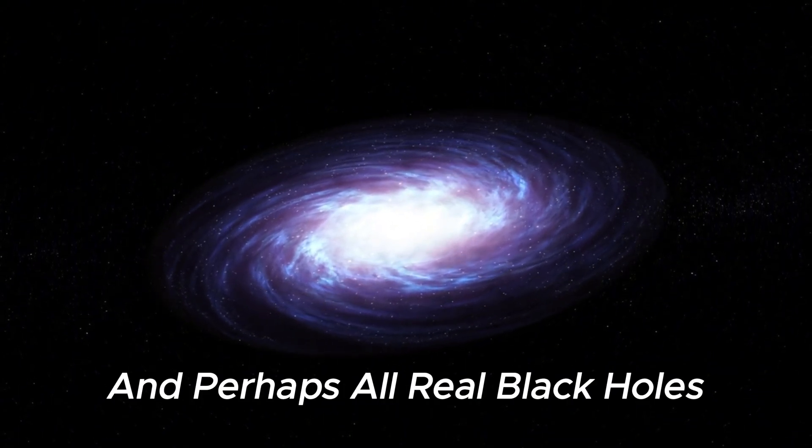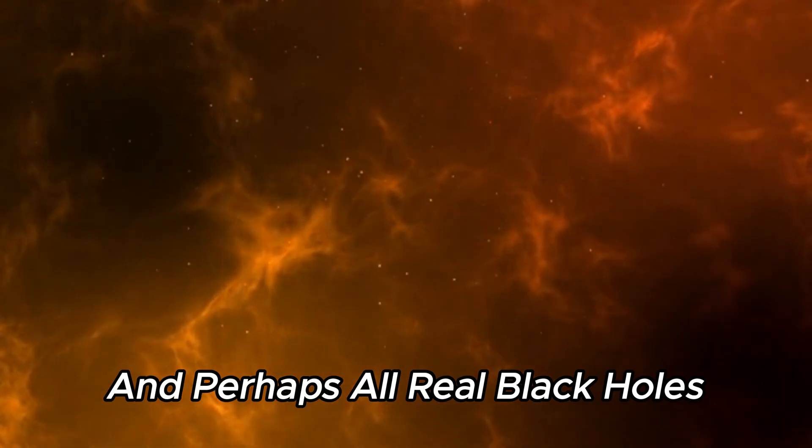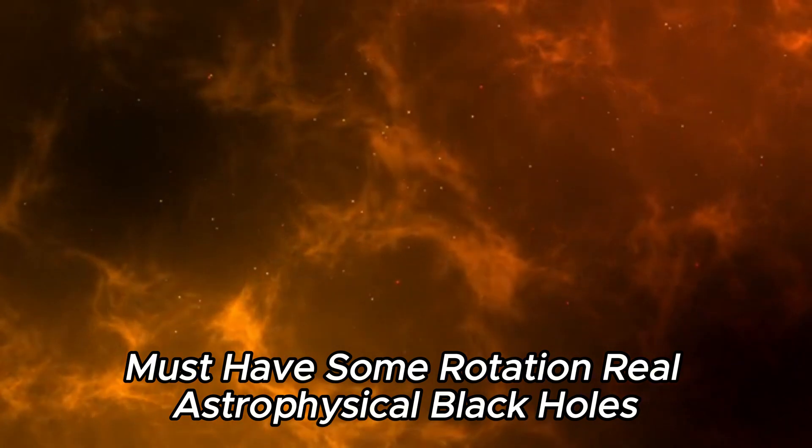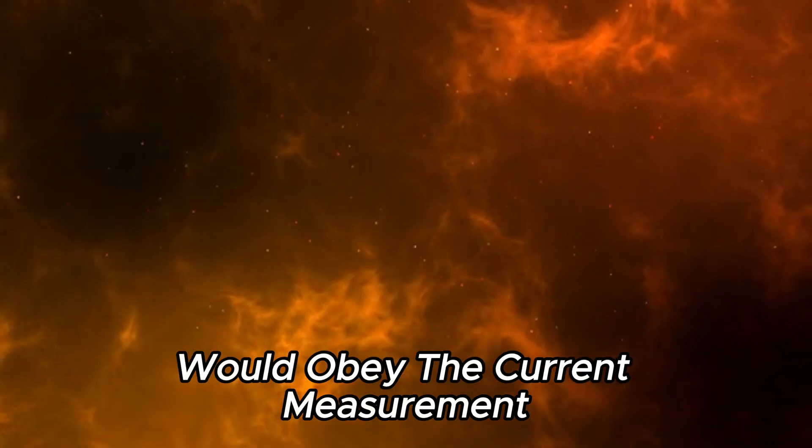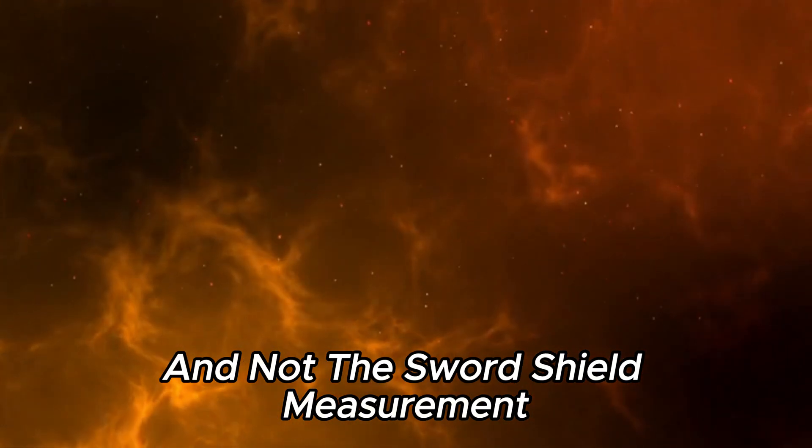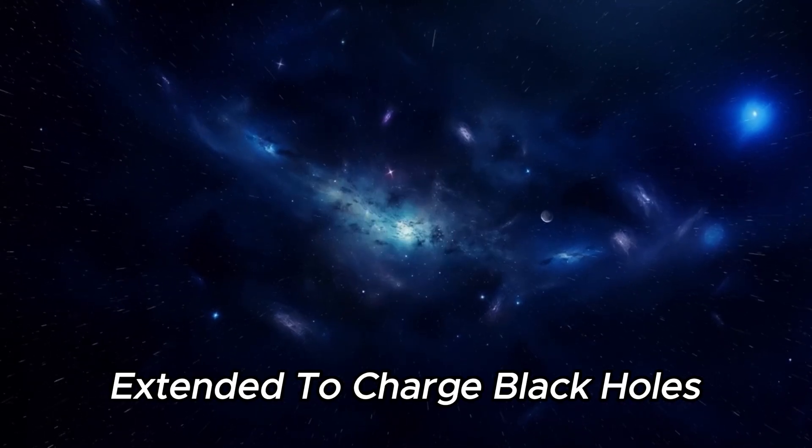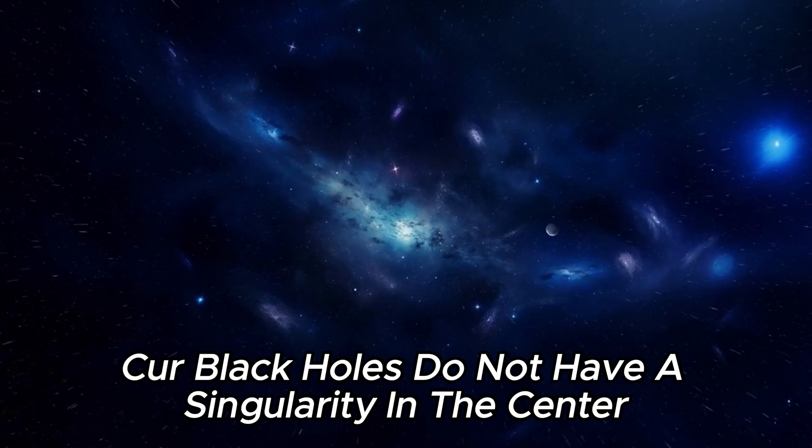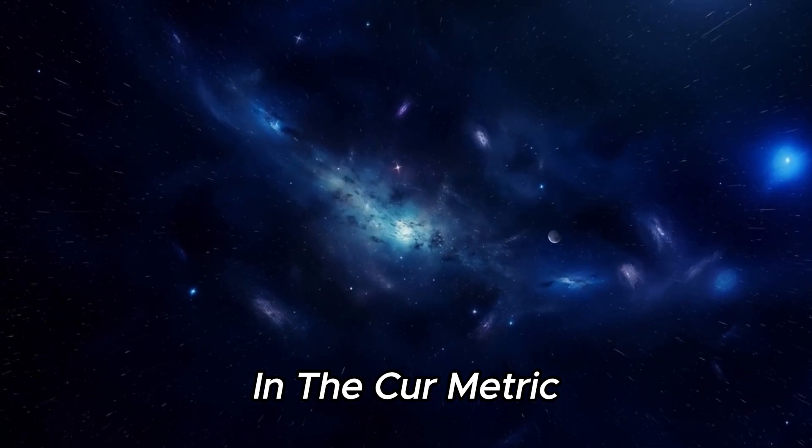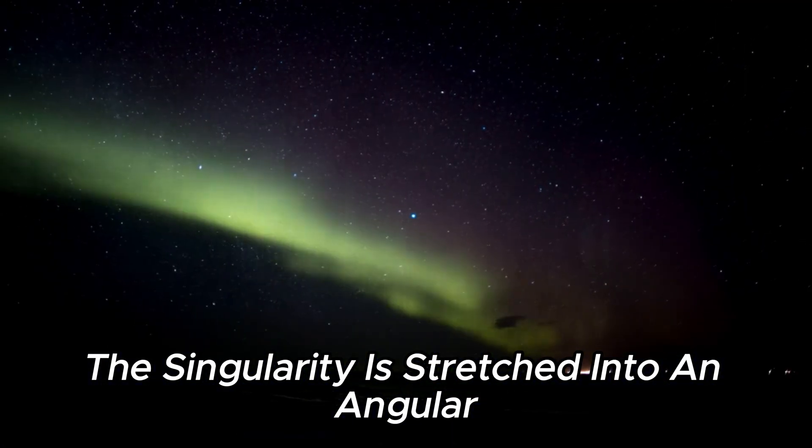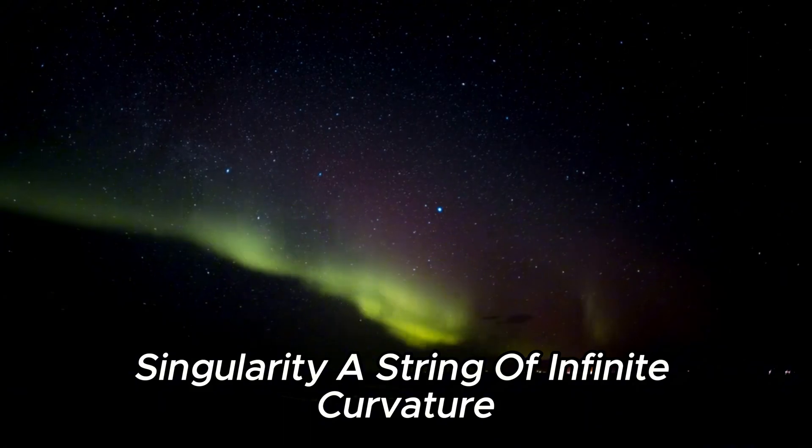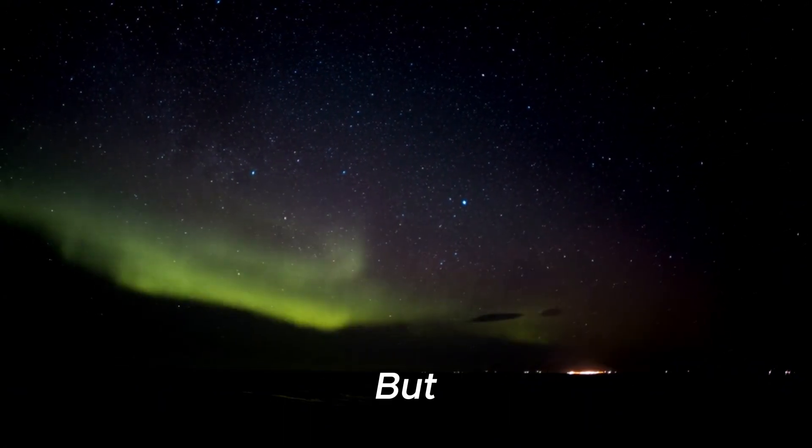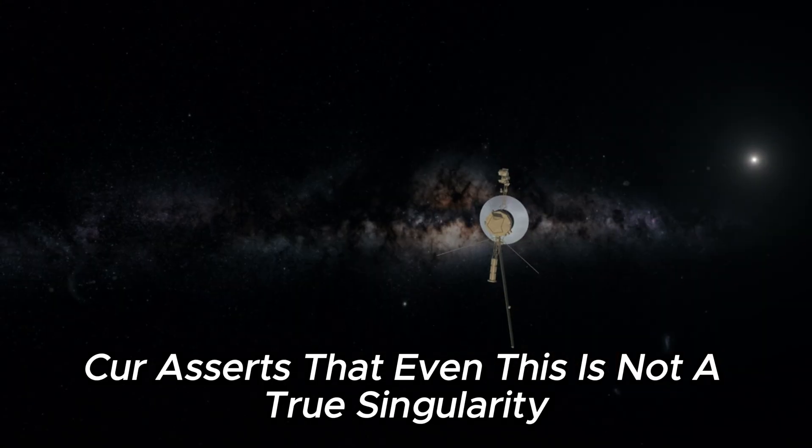Essentially all, and perhaps all, real black holes must have some rotation. Real astrophysical black holes would obey the Kerr metric and not the Schwarzschild metric. And the same argument can be extended to charged black holes. Kerr black holes do not have a singularity in the center. In the Kerr metric, the singularity is stretched into an annular singularity, a ring of infinite curvature. But Kerr asserts that even this is not a true singularity.